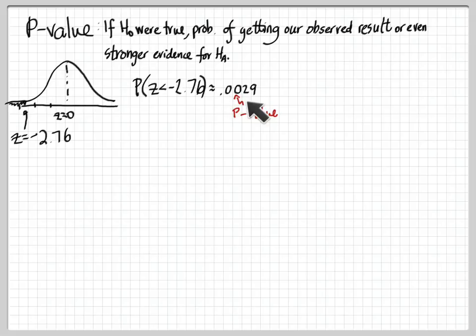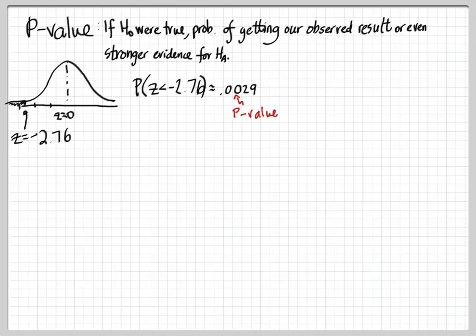So let's think about what that tells us. We have one of two choices. We could say, well, maybe the null is true and just by chance we got an extremely unlikely result. That is possible — it could be that there was still 60% of students taking music lessons and we, by chance, got an unlikely result. There's really no way to tell; we're taking a chance when we make our conclusions here. Our conclusions are probabilistic in nature.